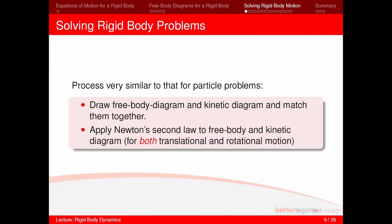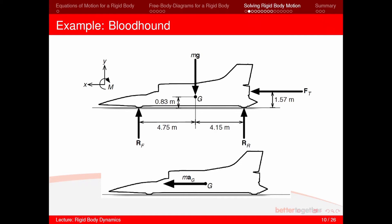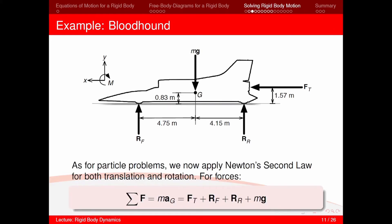Now that we've drawn the free body diagram, the next step is to solve for all the unknowns. This process is very similar to that for particle problems. We've drawn the free body diagram and kinetic diagram, and now we apply Newton's second law to them. In rigid body dynamics, we need to use both the translational and rotational motion equations. Going back to our free body diagram, we apply Newton's second law for both translation and rotation.